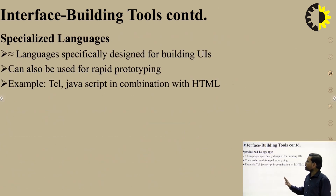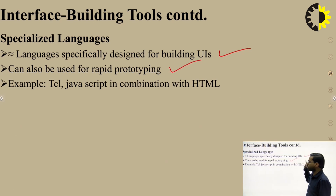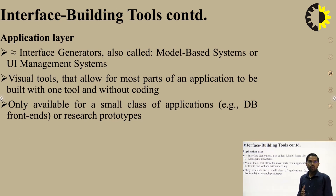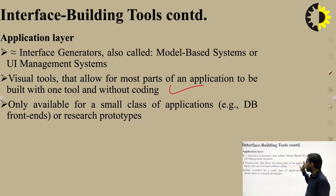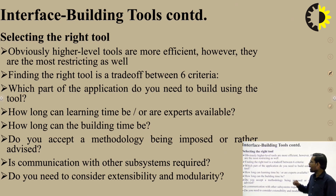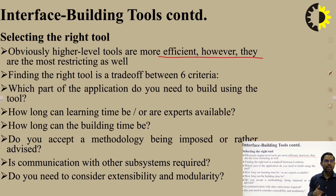Specialized languages are specifically designed for building UI and can also be used for rapid prototyping. Examples: Tcl, JavaScript combined with HTML. The application layer — also called interface generator, model-based, or UI management system — is a visual tool that allows most parts of an application to be built with one tool and without coding. It is only available for a small class of applications.